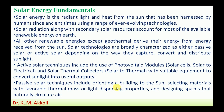Passive solar techniques include orienting a building to the sun, selecting materials with suitable thermal mass or light dispersion properties, and designing spaces that naturally circulate air. The building is oriented toward the sun such that during hot periods, cooling of the building takes place using the sun's heat energy, and in winter, heating of the building takes place using the sun's energy. This design approach is called passive solar technique.